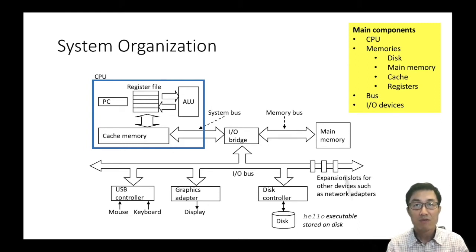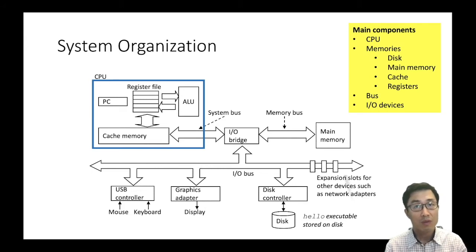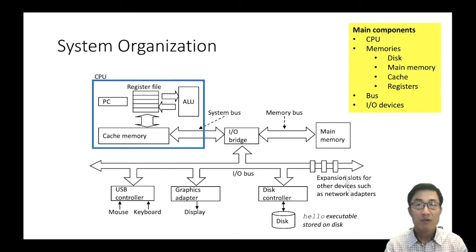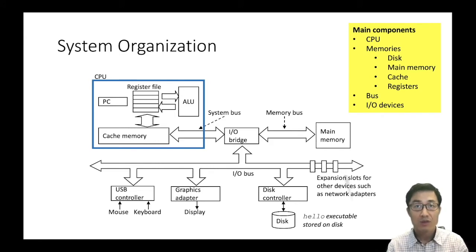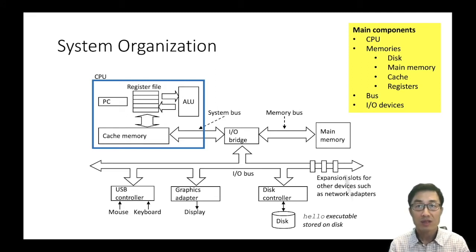This is a simplified system organization diagram. We have CPU in a blue box. CPU is a chip built upon billions of transistors — it's like a brain of the system and very complex. To name a few important components of CPU, we have registers, which is the fastest small temporary storage. And we have ALU, arithmetic and logical unit, that does calculation and makes decisions.